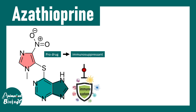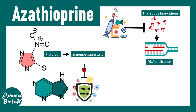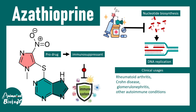Azathioprine is a prodrug, meaning it is not active by itself but is eventually metabolized into a transient form that does the job of immunosuppression. Its metabolic derivatives block the biosynthesis of nucleotides, or create nucleotide analogs that incorporate into DNA replication or transcription and block the normal process of DNA replication.